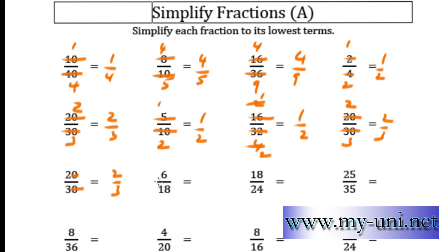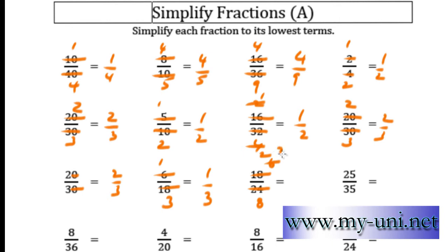You can use the 3 times table or the 6 times table — both will do. 6 times 1 is 6 and 6 times 3 is 18, so 1 over 3 is the answer. Using the 3 times table: 3 times 6 is 18 and 3 times 8 is 24; then 2 times 3 is 6 and 2 times 4 is 8, giving 3 quarters or 3 over 4.